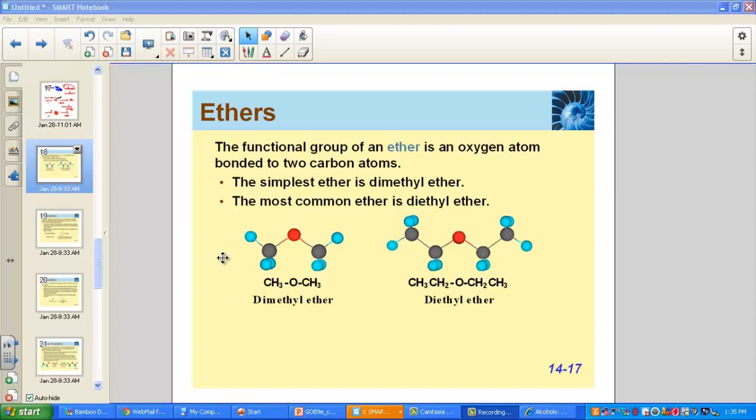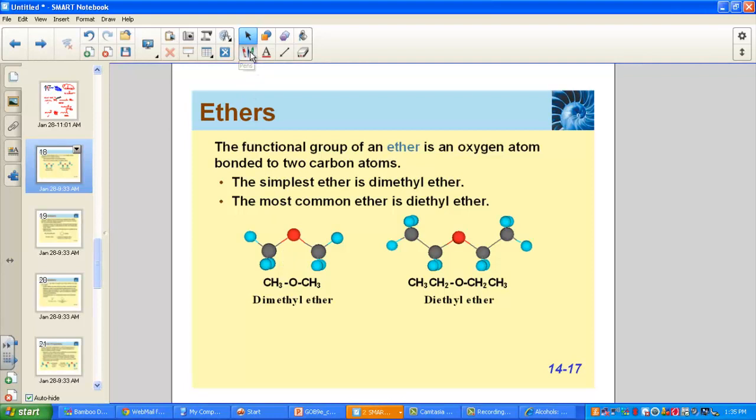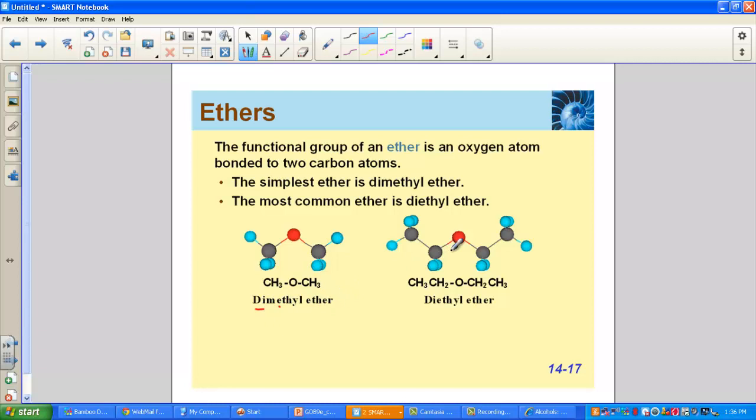An ether is a compound containing an oxygen atom bonded to two carbon atoms. Looking at the structure of our simplest ether, we have an oxygen with a methyl group attached on either side of the oxygen. We call it dimethyl ether.